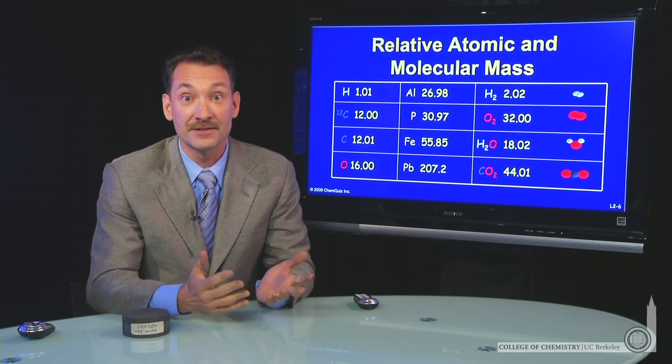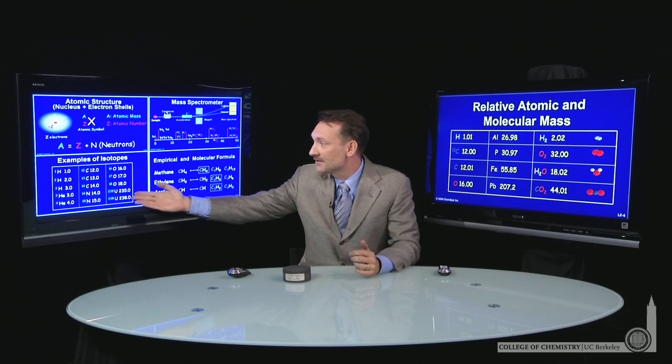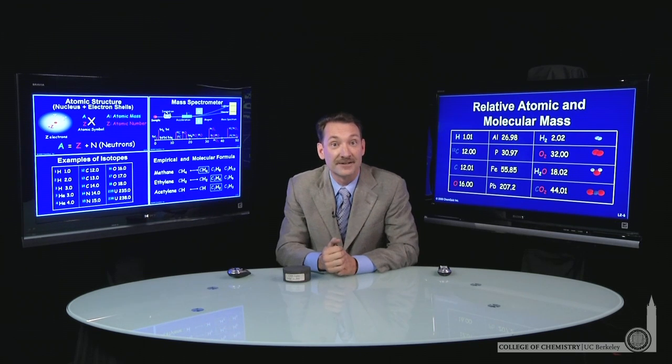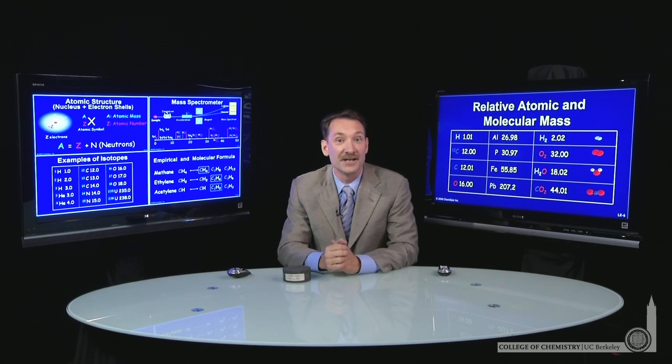If you go to a very heavy nucleus, say uranium, for instance, two naturally occurring isotopes are uranium-235 and uranium-238. That's a very small percentage difference in mass.